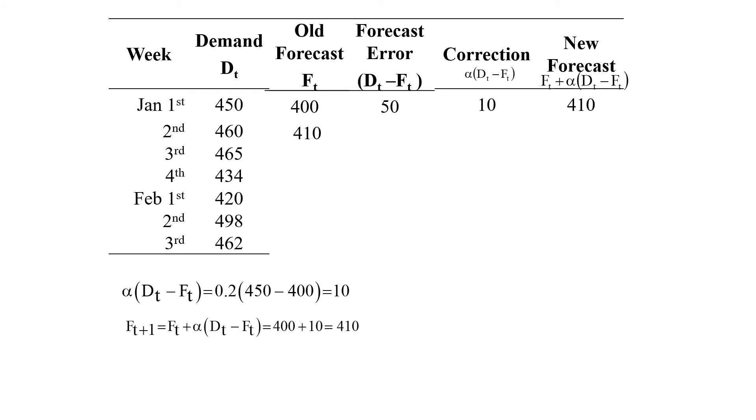In the same manner for the second one, when we put this new forecast value of 410 and we find out the forecast error, correction and the new forecast, it comes around 420.